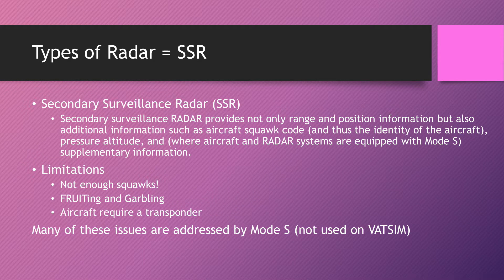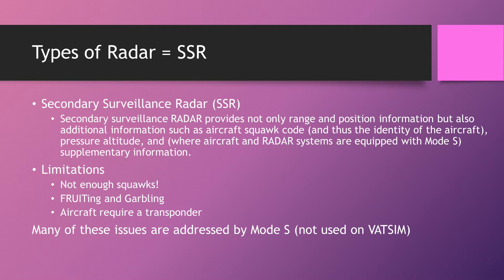Secondary surveillance radar, or SSR, is a newer type of radar that works purely off transponders. You may have seen these on top of control towers in the real world — the tiny little bars that spin round — that's an SSR receiver. They send out a signal on one frequency: 1090 megahertz. When the aircraft transponder receives that signal, it replies back with whatever information it can transmit. Mode C replies with the squawk code and pressure altitude, Mode S replies with all its additional data, and Mode A replies with just the code.